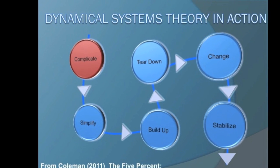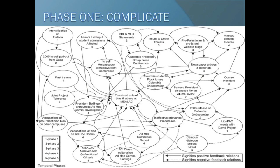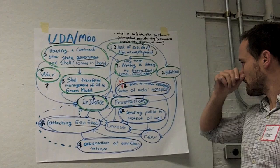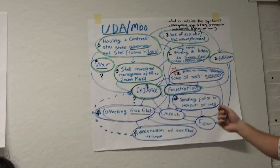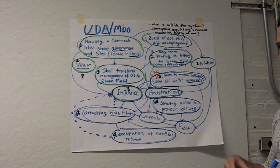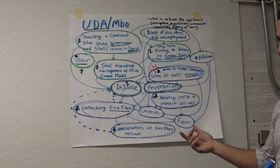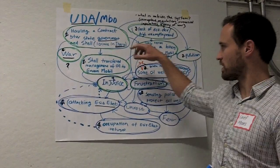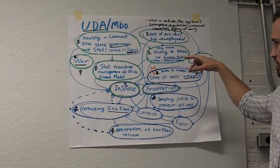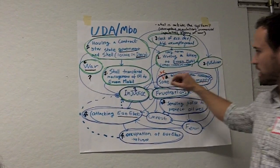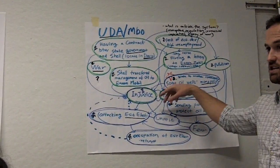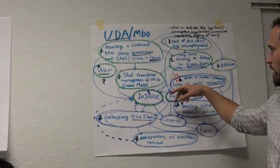Dynamical systems theory sees each conflict as a unique system of interconnected actors, issues, and processes. Applying these, he begins with a mapping process — an exercise that allows users to make the connection between the events and actors in the conflict's history. Stakeholders are asked to draw the conflict as they perceive it, going as far back as they feel appropriate. Events are circled and linked with arrows that show how each event led to another or inhibited another from happening. The process allows participants to visualize the events that brought them there.